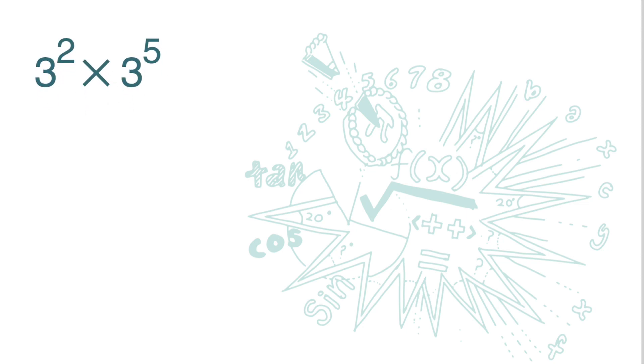Next, let's look at the multiplication of indices. This is 3 to the power of 2 times 3 to the power of 5. 3 to the power of 2 is 3 times 3. 3 to the power of 5 is five 3's.